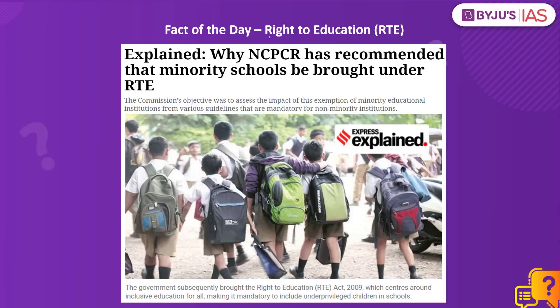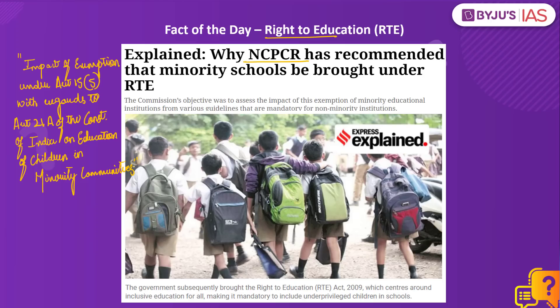Now the fact of the day, which is the Right to Education. The National Commission for Protection of Child Rights (NCPCR), after assessing minority schools in the country, has suggested that minority schools must be brought under the Right to Education Act. The report submitted by NCPCR is titled 'Impact of Exemption under Article 15 Clause 5 with regards to Article 21A of the Constitution of India on Education of Children in Minority Communities.' At present, schools run by minority organizations are exempt from implementing the Right to Education policy and do not fall under the government's Sarva Shiksha Abhiyan.